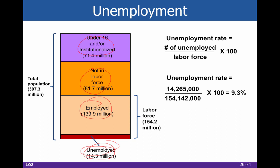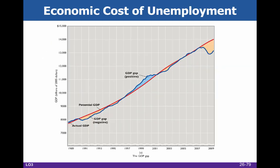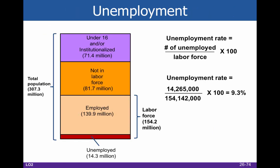The unemployment rate is the number of unemployed people divided by the labor force. This right here is the labor force, and this whole portion is not in the labor force. So the unemployment rate is 14.3 million divided by 154 million, which gives us 9.3% — which is what it was in the year they were doing this. Right now it's at record lows, somewhere in the 3 or 4%, depending on how you're calculating things.